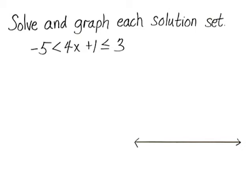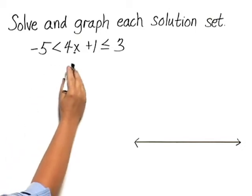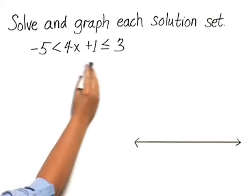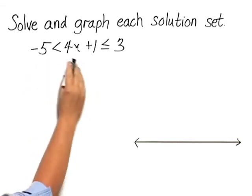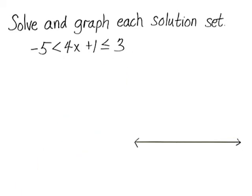When written like this, we can solve for x by getting x by itself in between the inequality symbols. We can do the same thing to all three parts of this compound inequality.